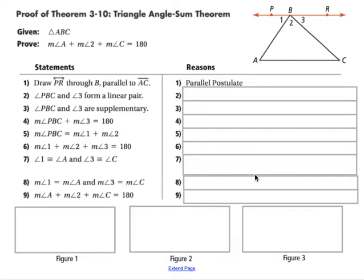So here's our proof of the triangle angle sum theorem. If we're given a triangle ABC, we want to prove that the sum of angles A, 2, and C, so the sum of the angles in the triangle are 180 degrees. So we're going to start out by drawing this line PR that goes through vertex B, and it's parallel to the opposite side AC. And we're going to use the parallel postulate to allow us to do that.